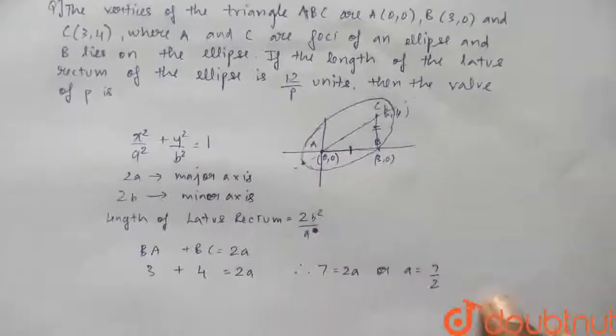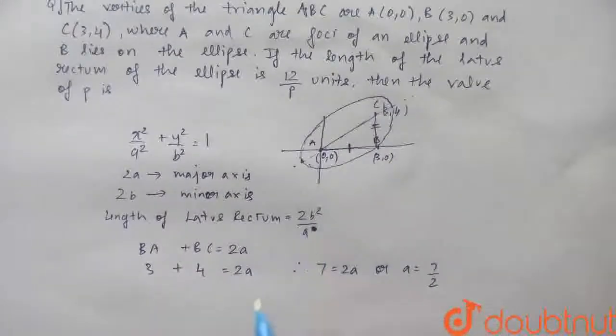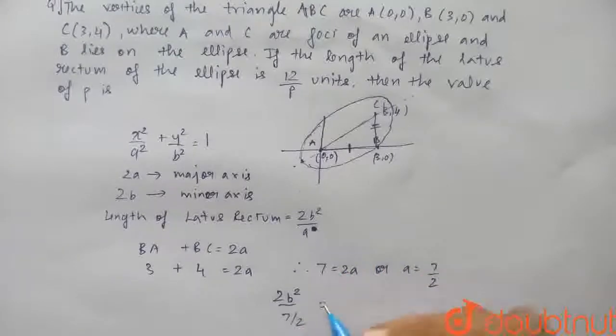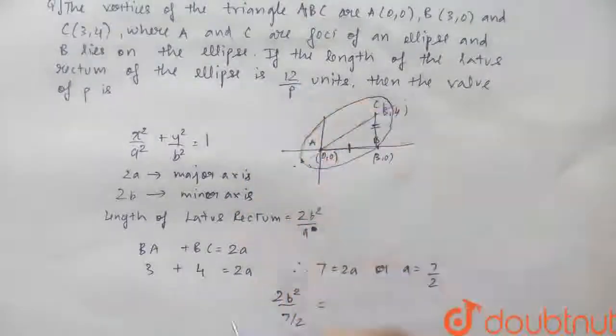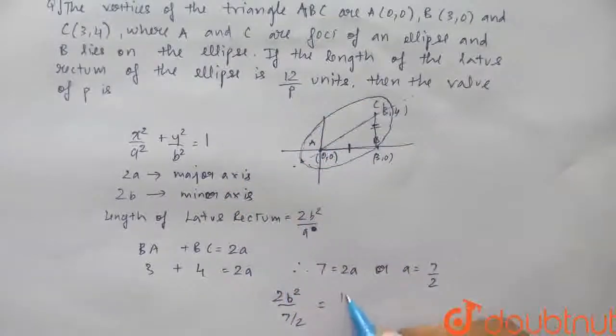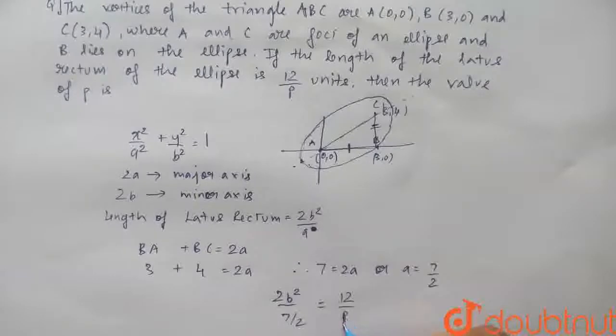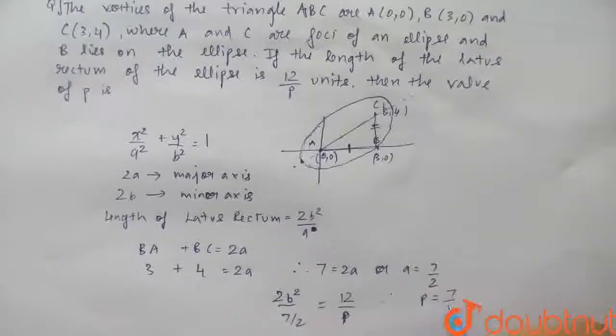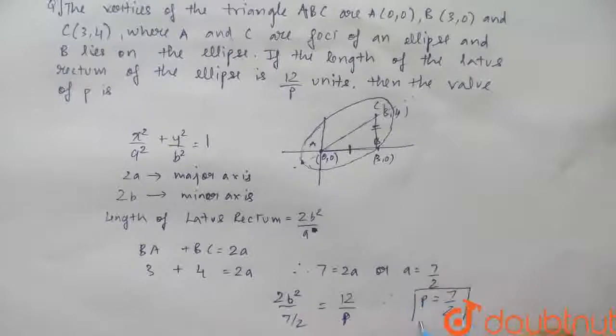Now, the length of the latus rectum is basically 2b²/a. The value of a is 7/2, which equals the given value of 12/P. So therefore, the value of P we got from here equals 7/2. This is the final answer for this question, or 3.5 units.